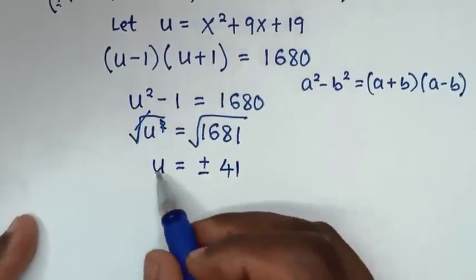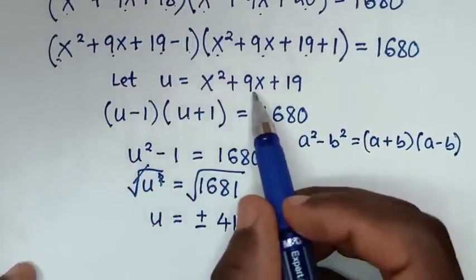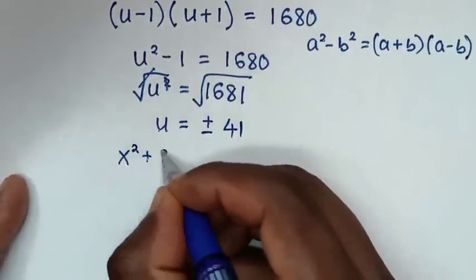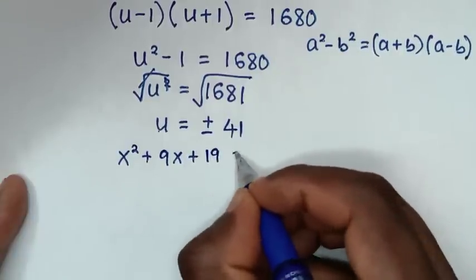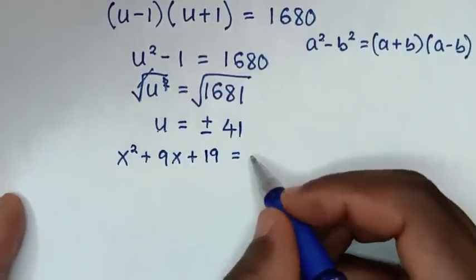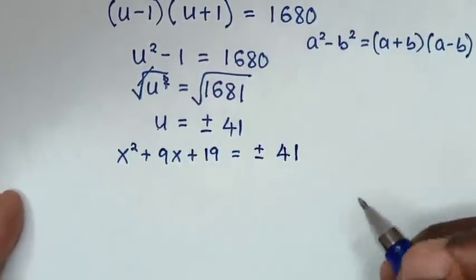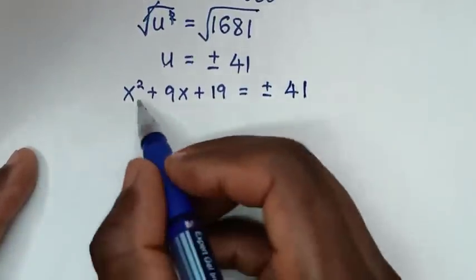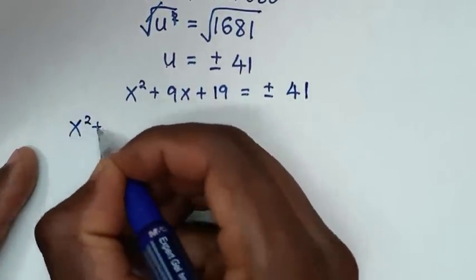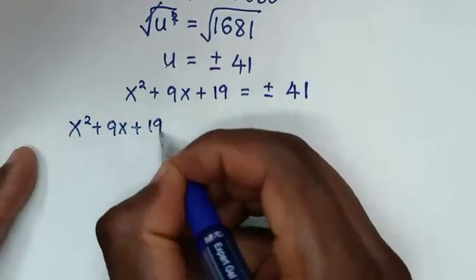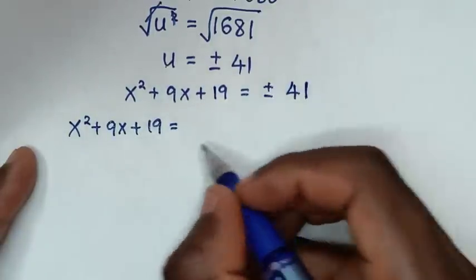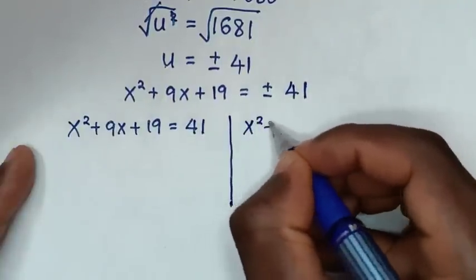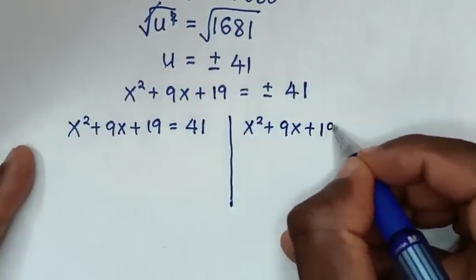Substituting back u = x²+9x+19, we get x²+9x+19 = ±41. This gives us two solutions: the first is x²+9x+19 = 41, and the second is x²+9x+19 = -41.